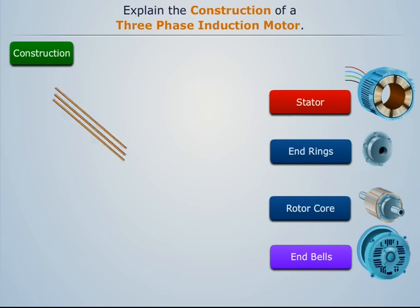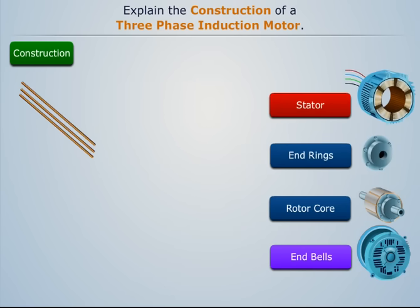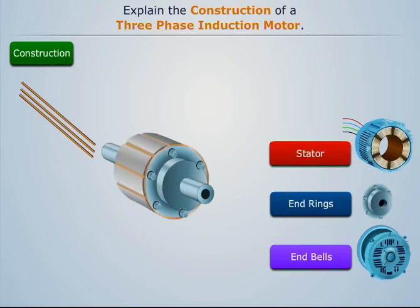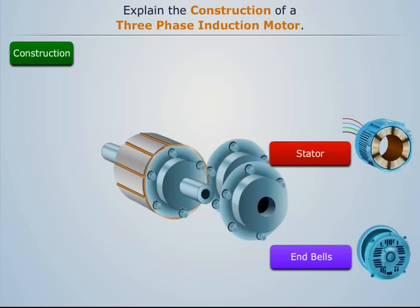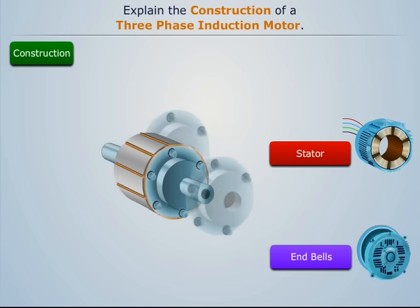Now insert the conducting rods in each slot of the rotor core. Then weld the end rings on both sides of the rotor core to short circuit all the winding rods on the core.